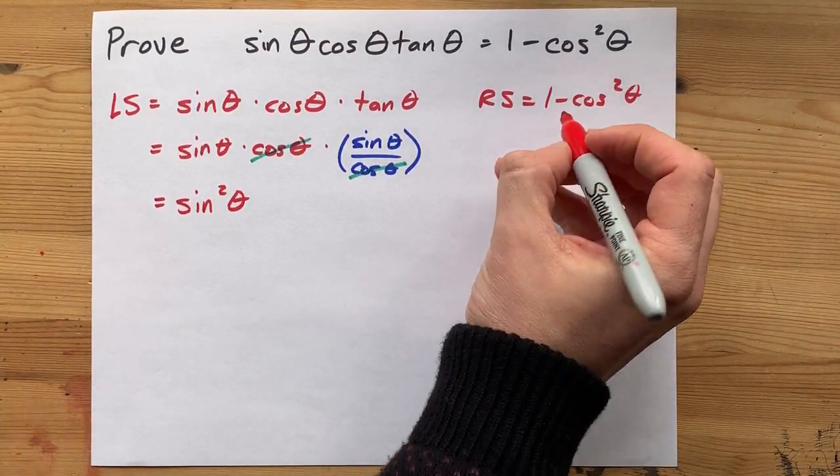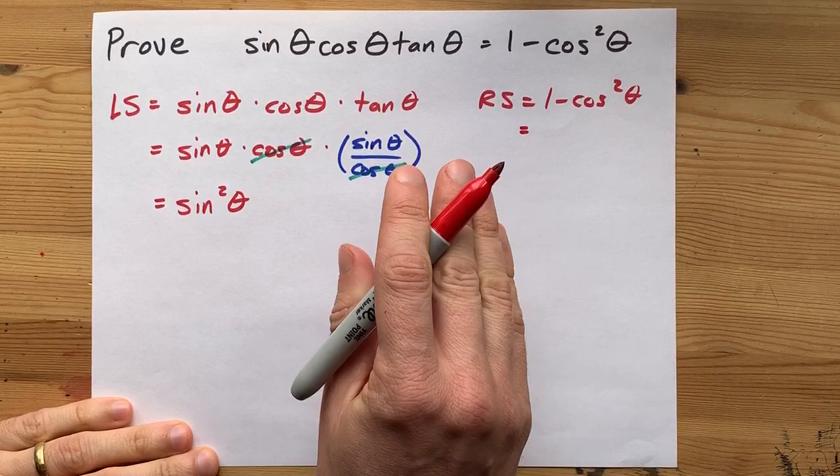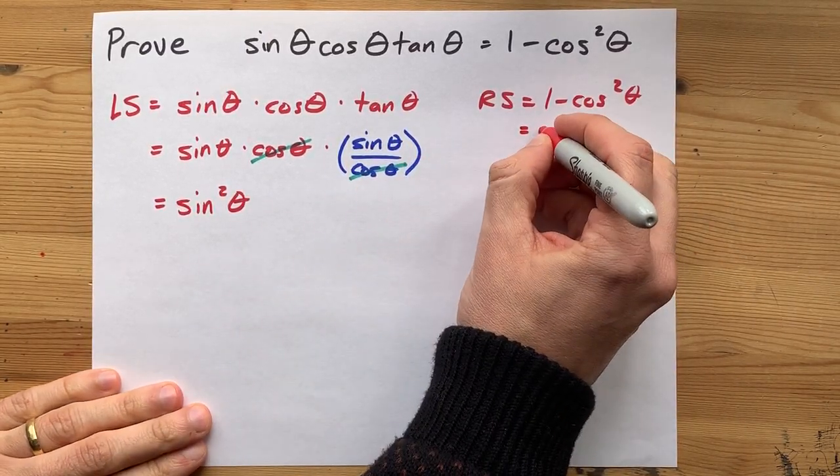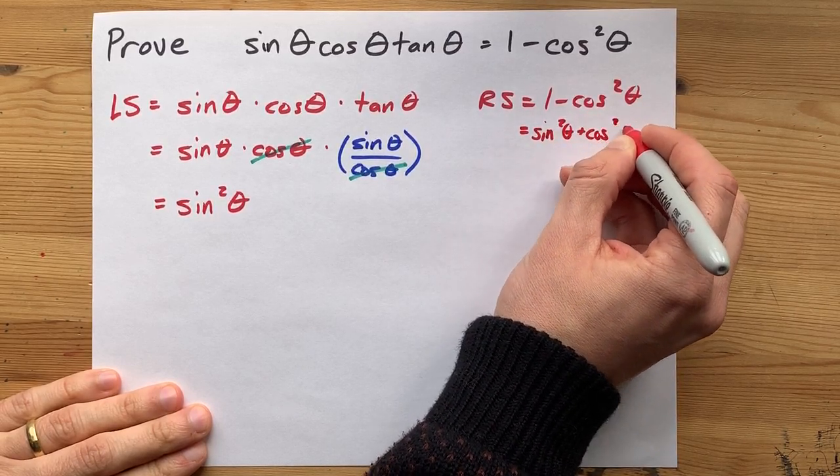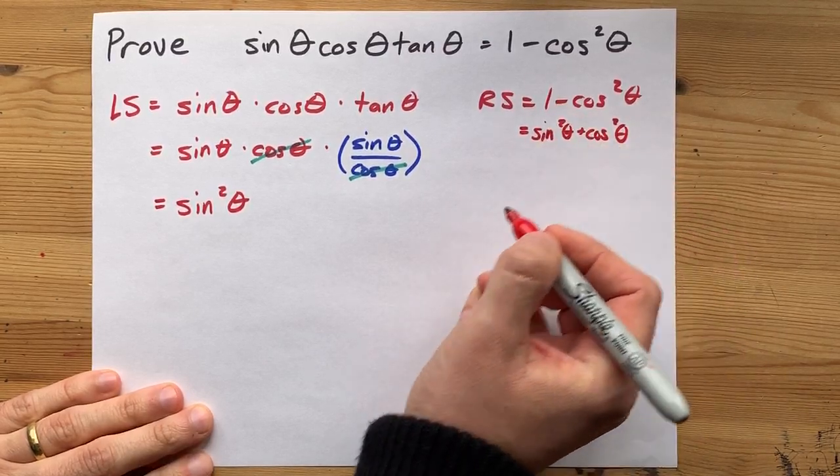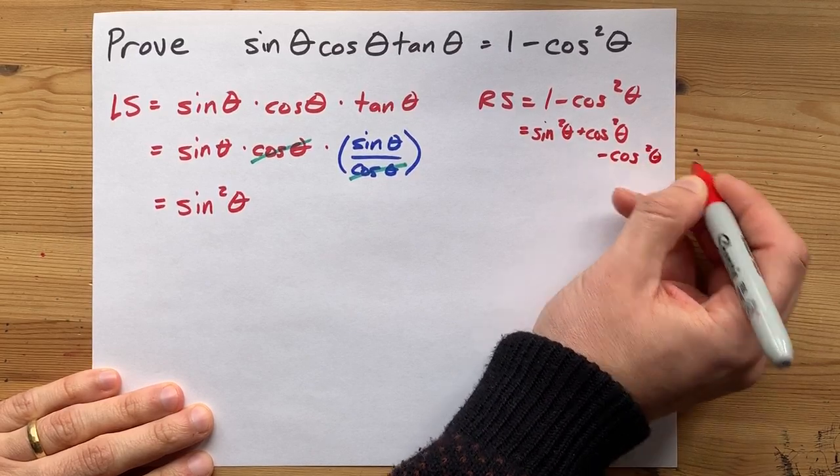I want to point out, though, that if you were to change the right-hand side as well, some teachers don't like you doing this, but you can replace 1 with sine squared plus cos squared, because sine squared plus cos squared of any angle is always equal to 1, and you still have your minus cos squared sitting there.